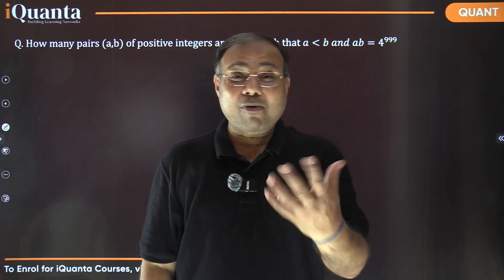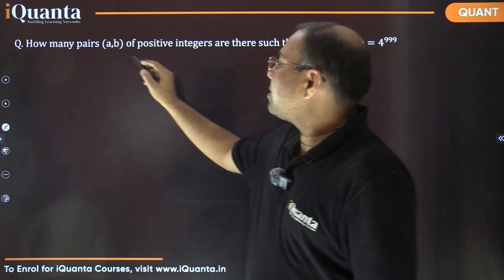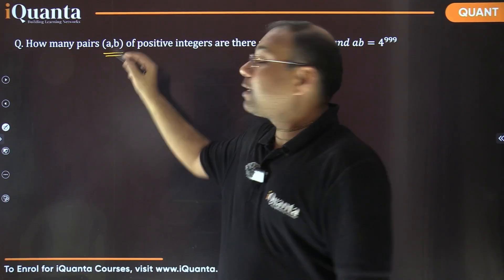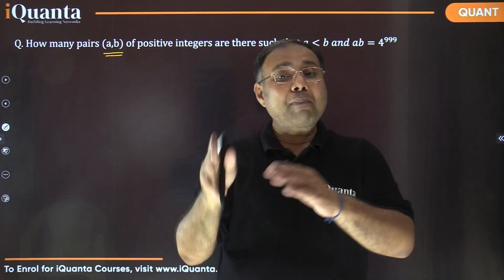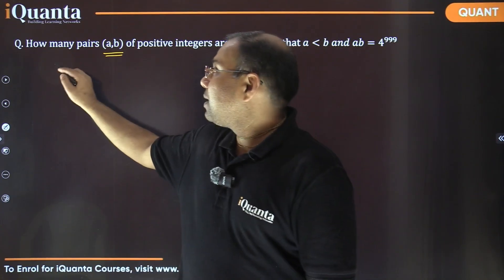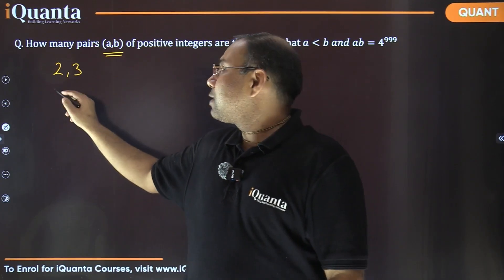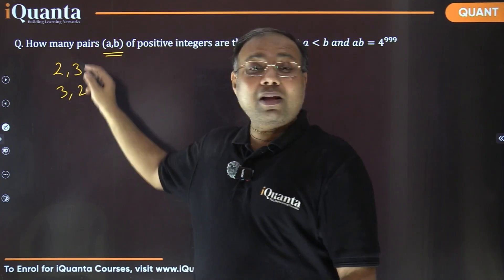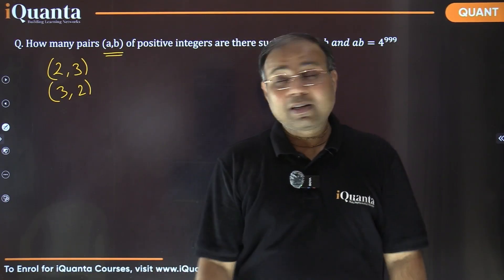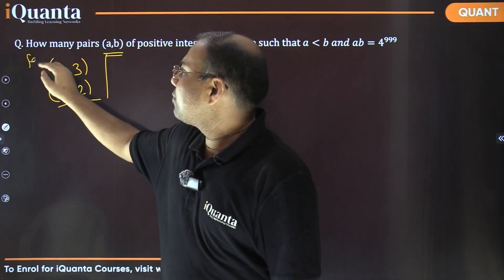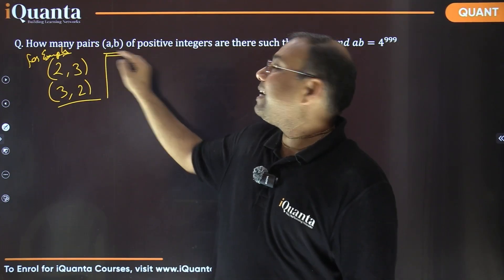So this is some of the good question. And now let's see how we need to go about this. It says how many pairs AB? So we need to calculate the pairs. And remember that when we are talking about pairs AB, when naming is mentioned, so A, B is different from B, A. So for example, if two, three is one of the pair possible and three, two is also possible, then they are to be considered as different pairs. Why? Because the naming is given. So these will be considered as different pairs if the naming is there.